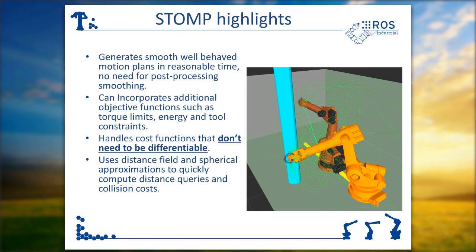Another thing STOMP does to be more efficient is it uses distance fields and spherical approximation of the robot links in order to compute distance queries and collision costs. This is more efficient than using the full geometry of the robot to provide the same results.